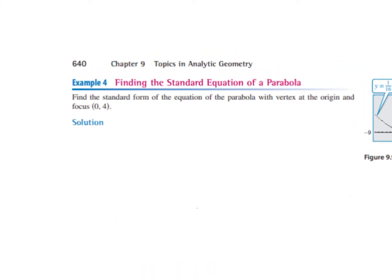Example 4: find the standard form of the equation of the parabola with the vertex at the origin and focus (0, 4). Our vertex is at (0, 0) and our focus is at (0, 4) — so we stay at 0 and go up 4. Our parabola opens up because our focus is at (0, 4); the parabola is like a little bowl that holds the focus.